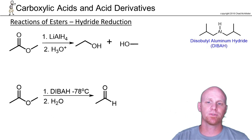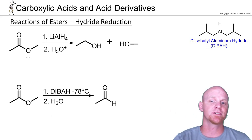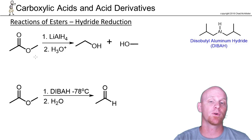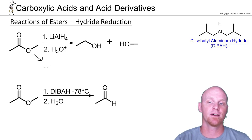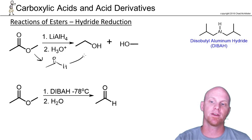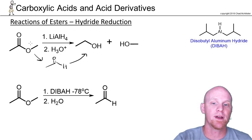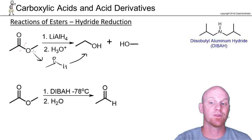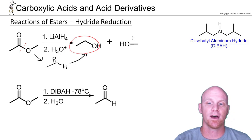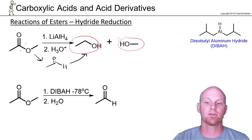Now we'll look at hydride reductions. Sodium borohydride is not reactive enough, but if we add lithium aluminum hydride it'll react once to produce the aldehyde and then react a second time to produce the alcohol. We break this bond, so we actually end up with two alcohols — one from the carbonyl side and one from the leaving group itself.